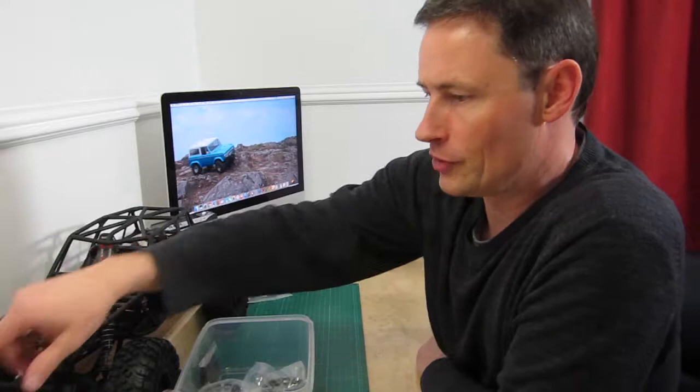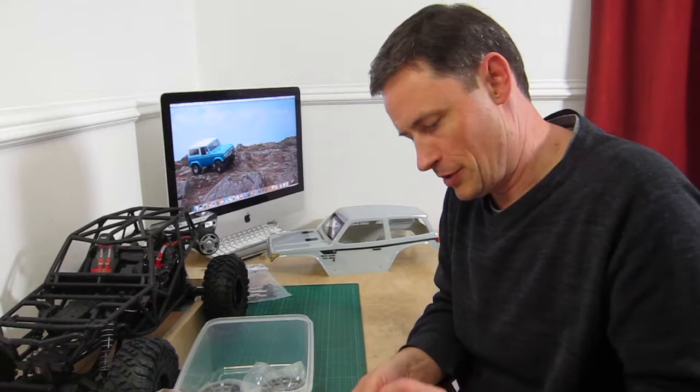I've also got large bearings and small bearings to go in the steering knuckles. And a Hobbywing 1080 ESC to run the motor. I do like these. The fact that they're programmable, they're 40 quid. Generally speaking, I think I got my last set for about 32 quid. I don't think you can go wrong for the money. You really can't.